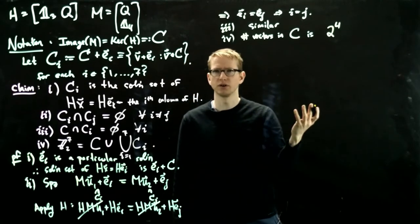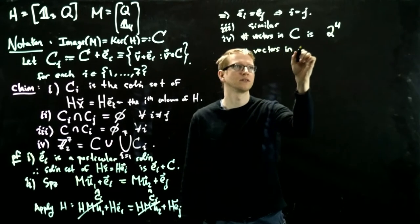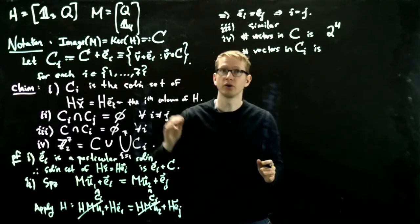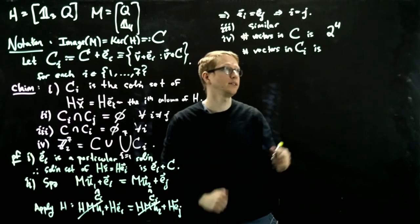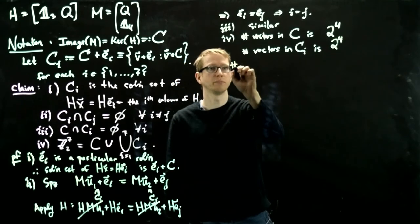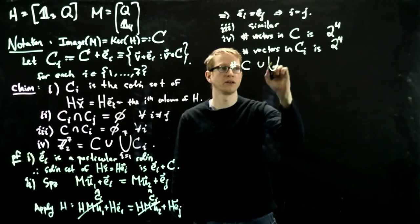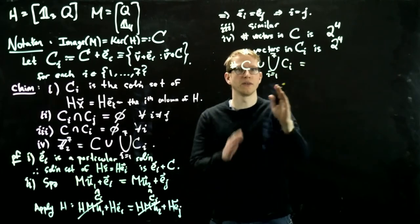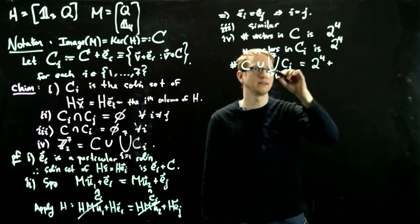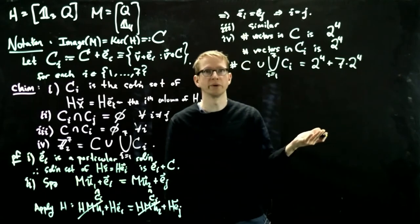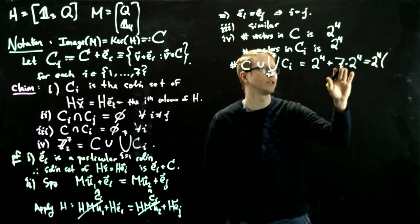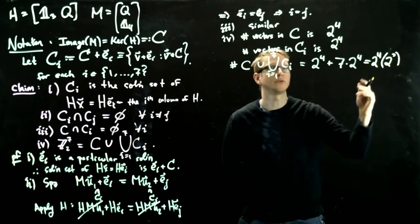Now, how many vectors are in C_i? Well, C_i is C shifted by a single vector. And therefore, it has exactly the same number of elements as C does. So it's also 2 to the 4. And how many of them are there? There's 7 of these. So the total number of vectors in C union, because these are all disjoint, is the number of vectors in C plus the number of vectors in C_i from i going from 1 to 7. So this equals 2 to the 4 plus 7 times 2 to the 4. But 7 is 2 to the 3 minus 1. So this equals 2 to the 4 as a common factor. And we have 1 plus 7, which is 8, which is 2 to the third. And that equals 2 to the 7.